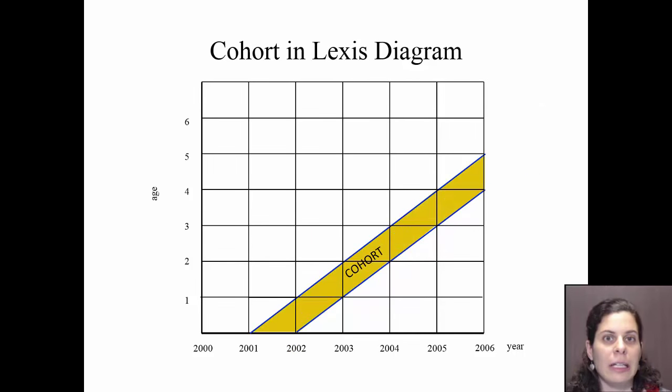Cohort is represented in a highlighted diagonal. They represent a particular cohort experience. Here, 2001.